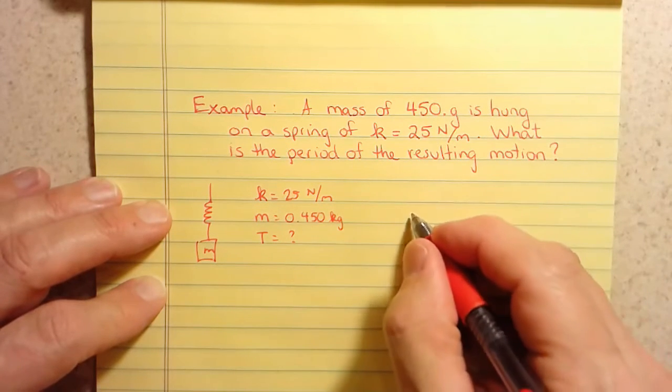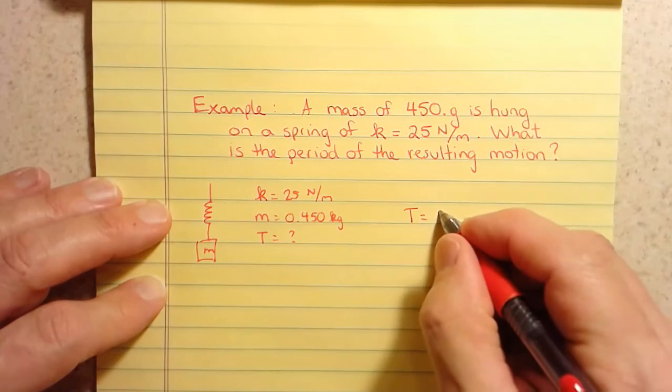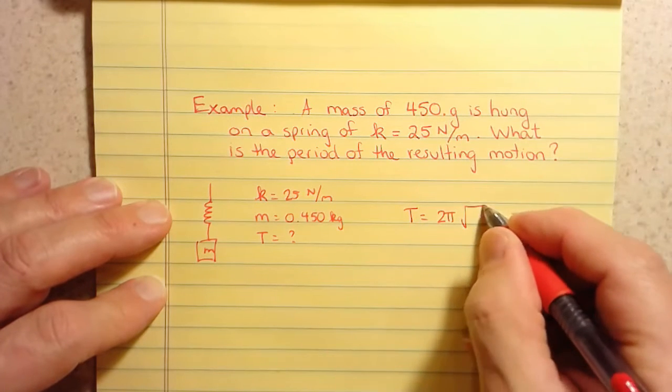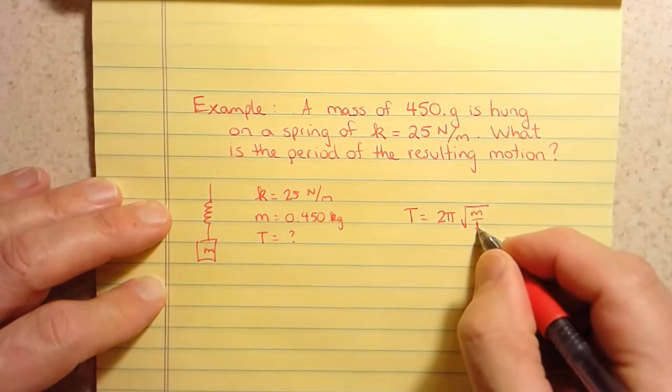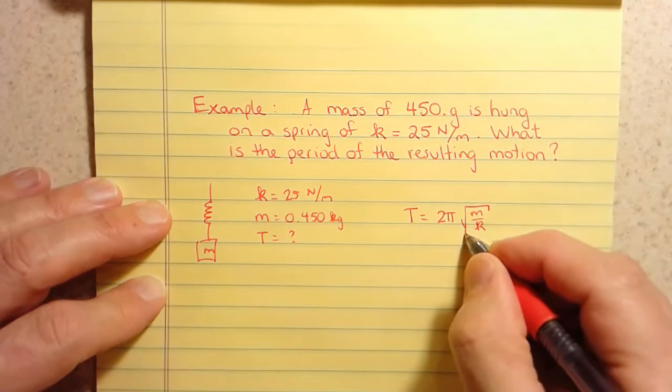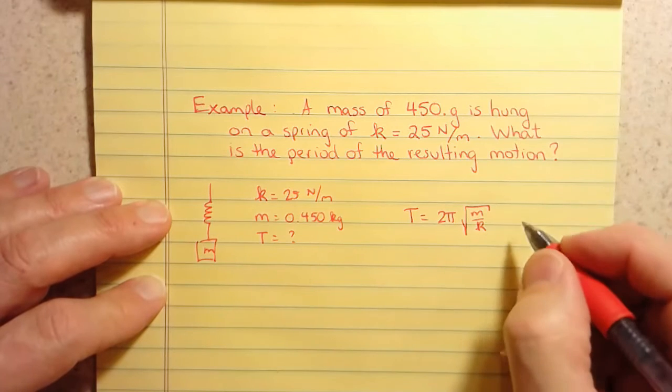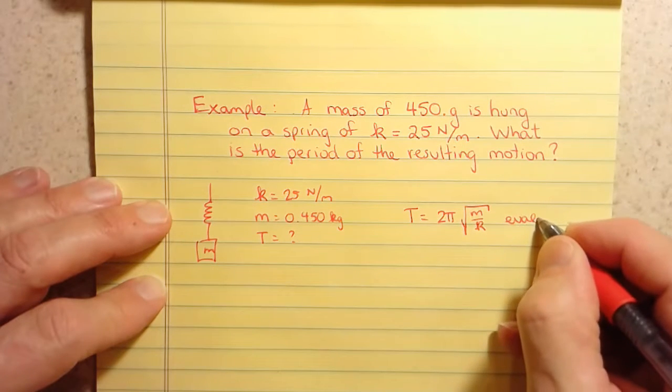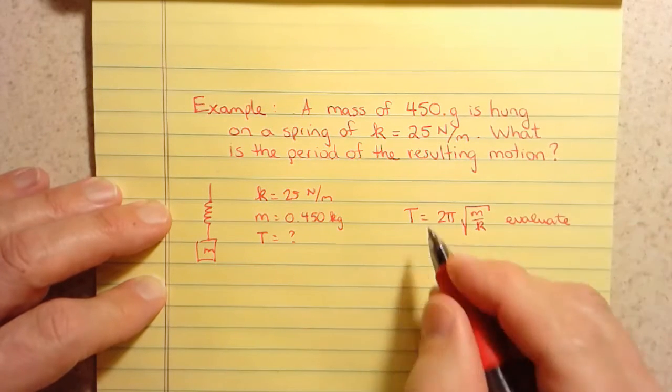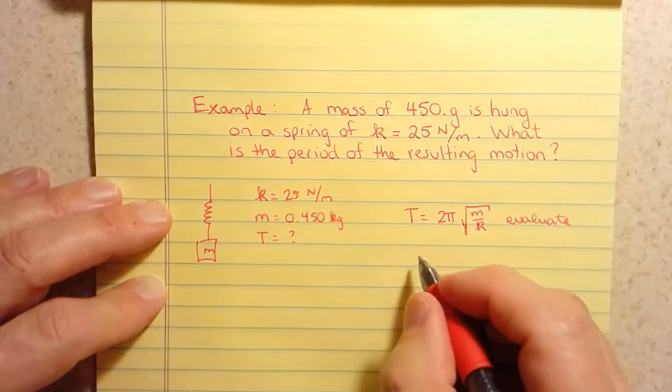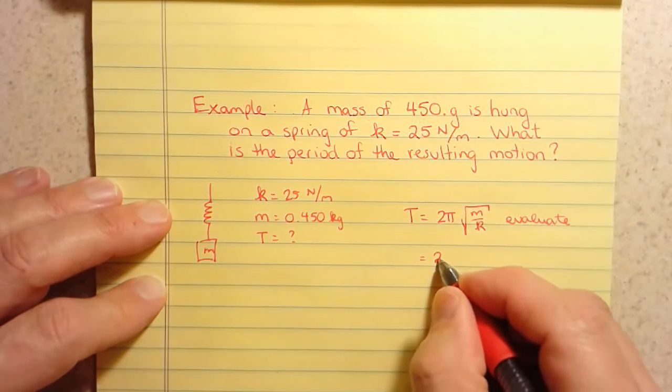So it's an easy relationship. The period equals 2 pi square root of m over k. Please make sure you write your square root so that we can see that both the m and the k are in them. And we want to evaluate this. We don't really need to solve for anything because we're trying to find T. So we're just going to evaluate it. So that's going to be 2 pi.